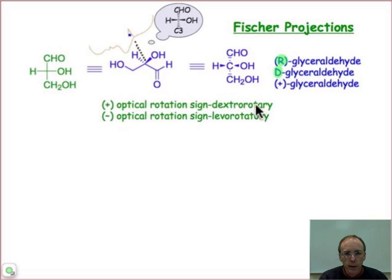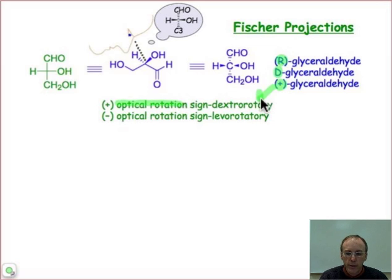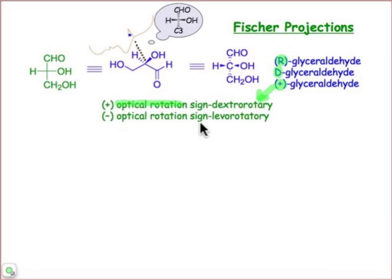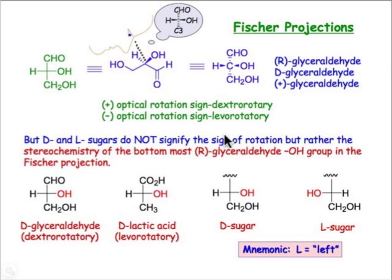Capital D, or capital L, does not represent dextrorotatory or levorotatory. We could also call this glyceraldehyde as the plus in front of it — the plus is the sign of optical rotation. The plus indicates an intrinsic property of that molecule: the way that plane-polarized light would be rotated when passing through an aqueous solution of it. We would say that sign is dextrorotatory. However, anytime we use the capital D, that does not represent that experimental observation of optical rotation. Just as we described D and L amino acids, we can describe capital D and capital L sugars.